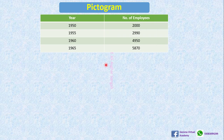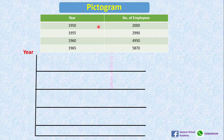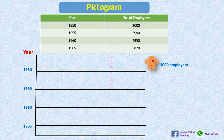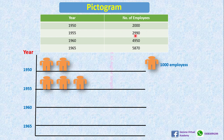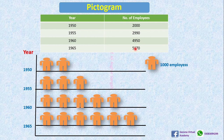For example, in a pictogram, here is data of some years and number of employees. First we draw lines, then we write the scale — the value of each icon, say 1000 employees. For 1950, 2000 employees, we write two icons. For 1955, about 3000, we write three pictures. For 1960, near 5000, we write five pictures.